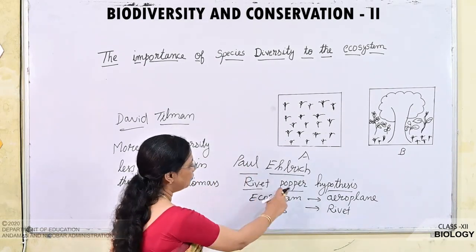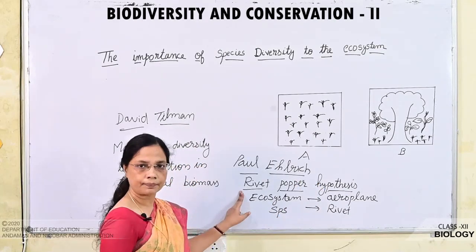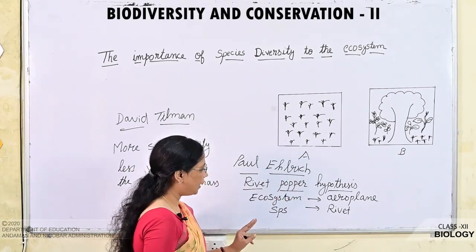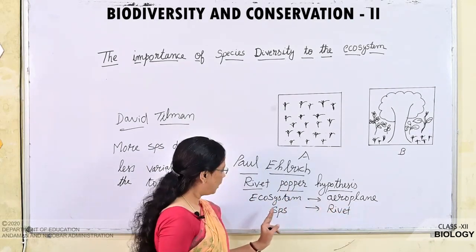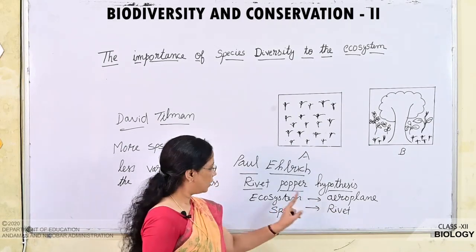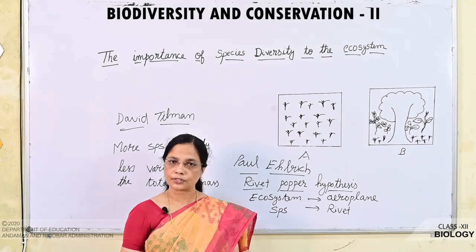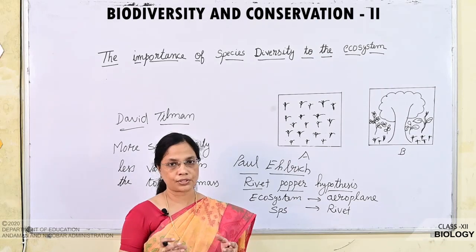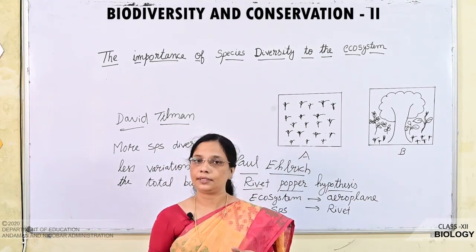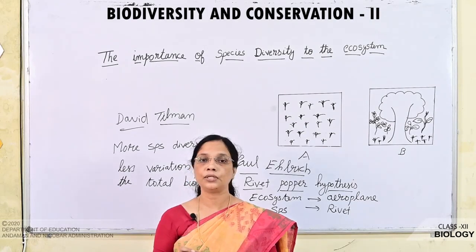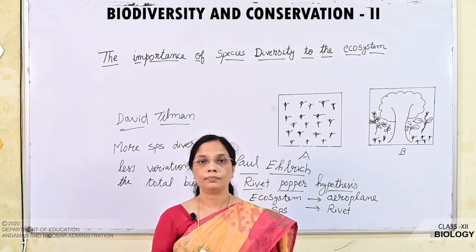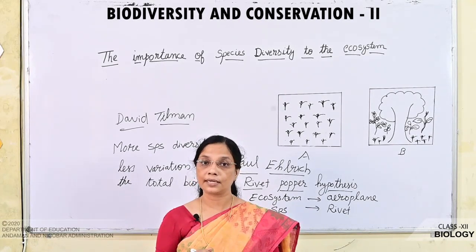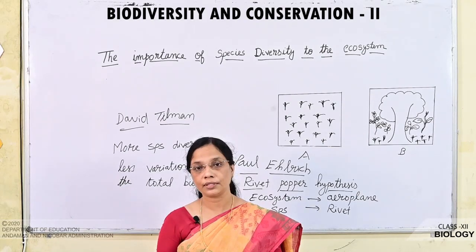So what does the Rivet Popper Hypothesis say? Proposed by Paul Ehrlich, it compares the ecosystem with an aeroplane and species with rivets. One species removed from the ecosystem will not greatly affect it, but there are certain key species that keep the ecosystem stable. If those species are removed accidentally or unknowingly by human beings, that will cause a great threat to the stability of the ecosystem.